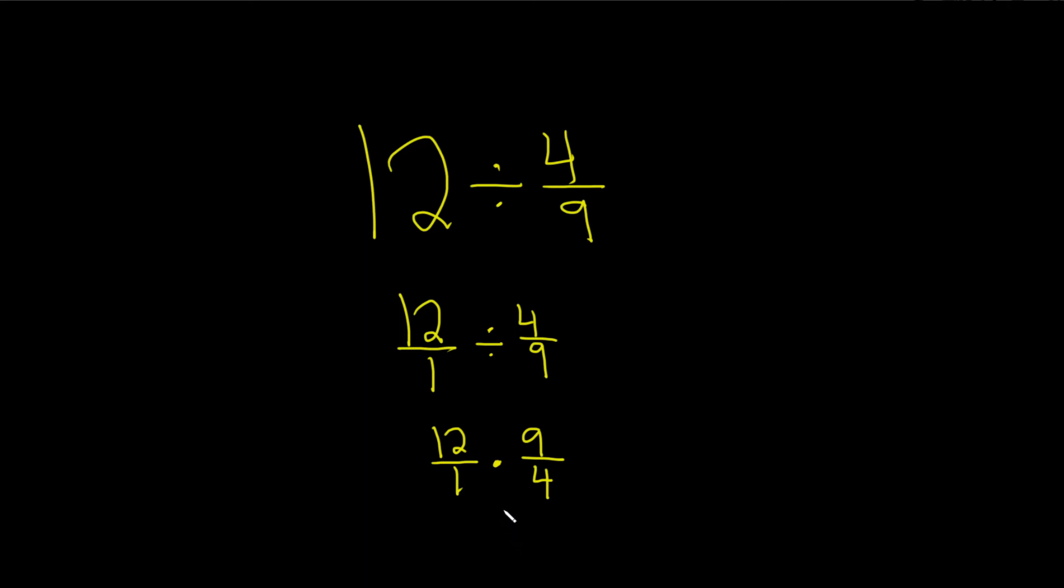Now let's see if we can cancel. The numbers on top are allowed to cancel with the numbers on the bottom. The 4 and the 12 will work. 4 goes into 4 one time, so you can cross it out and put a 1. And 4 goes into 12 three times, so you can cross it out and put a 3.